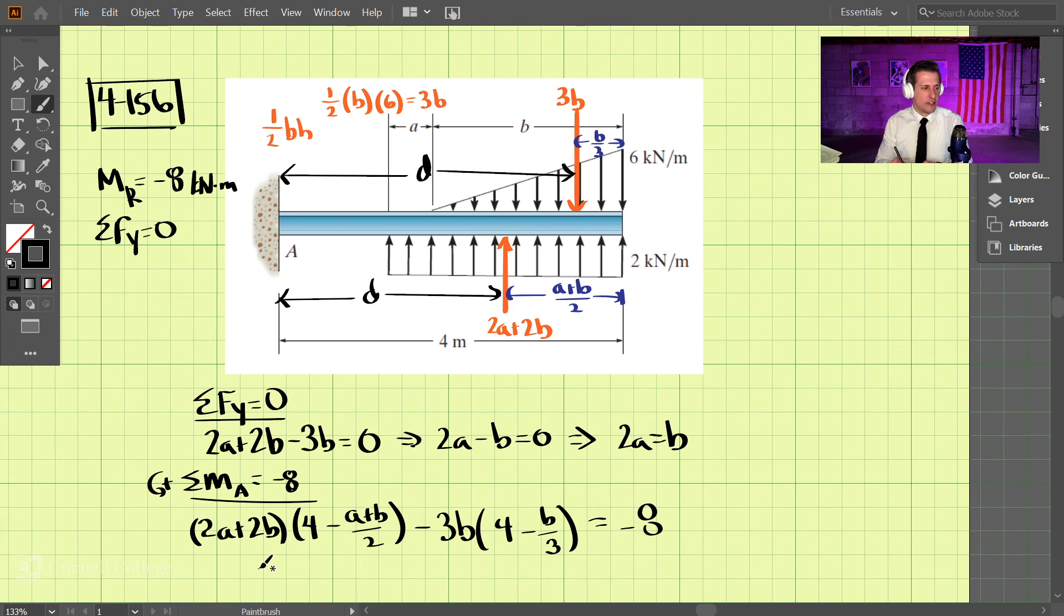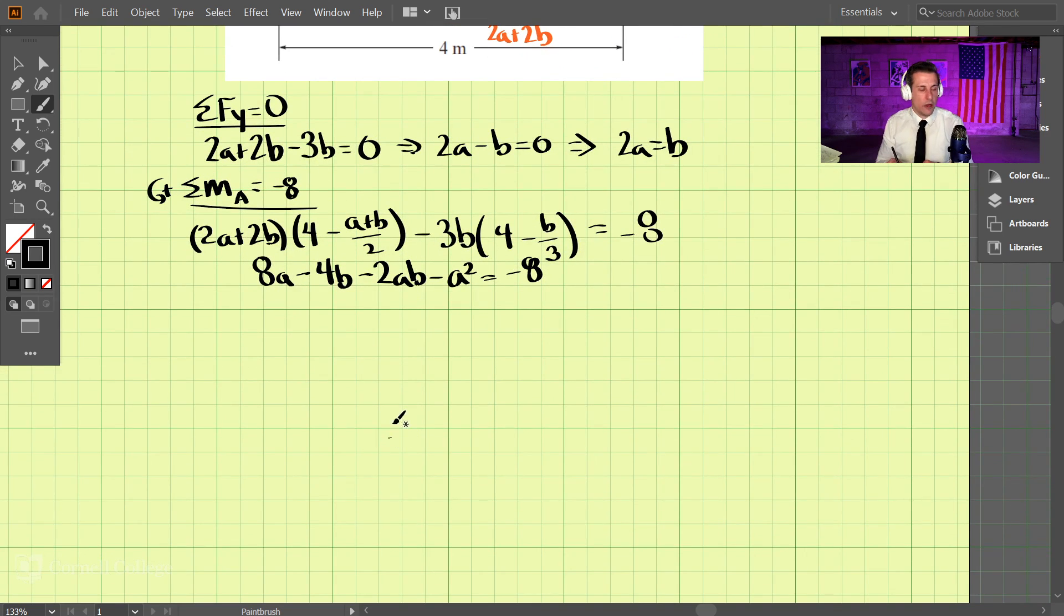Now we can simplify this equation to get into the algebra side of this problem. We have 8a - 4b - 2ab - a² = -8. We can substitute 2a for b into this equation. It comes out a little messy, but this ends up simplifying to a = 1.26 meters and b = 2.53 meters. That's our solution.